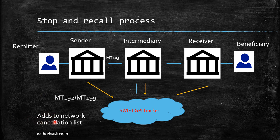The first thing the GPI tracker does is add this UETR number to the network cancellation list. The MT192 or MT199 also contains the UETR number. By adding it to the cancellation list, the tracker ensures the message cannot go forward in the chain — the intermediary cannot forward it to the receiver.